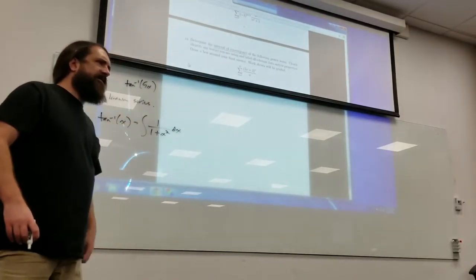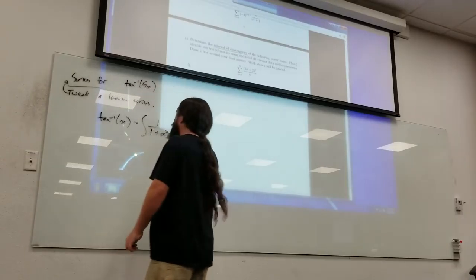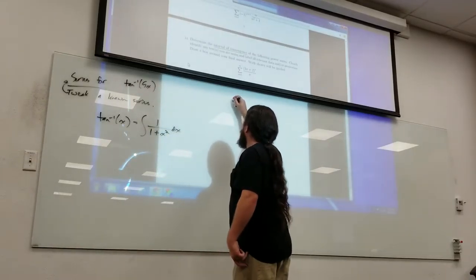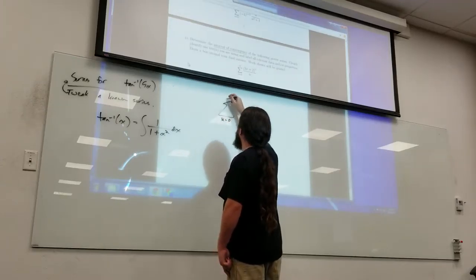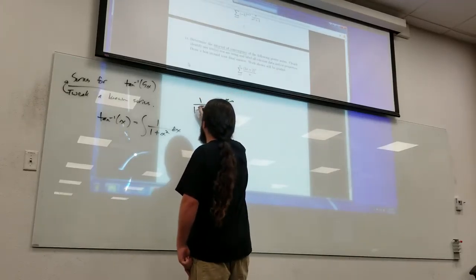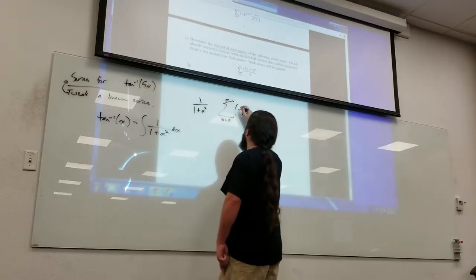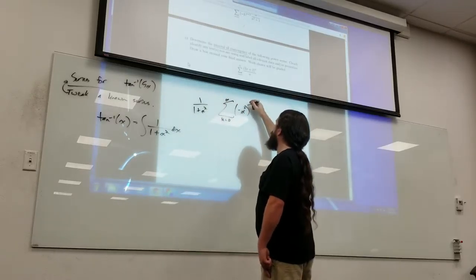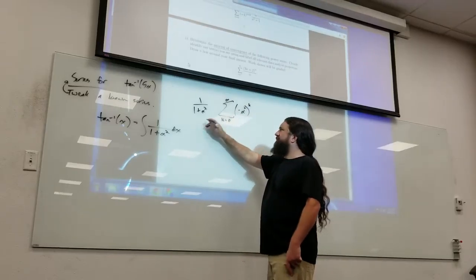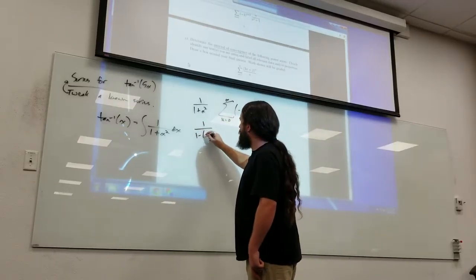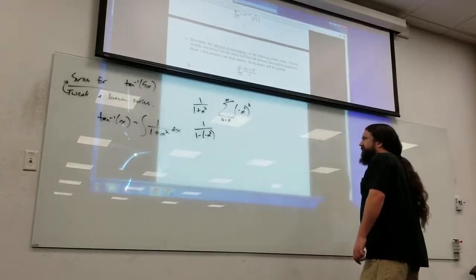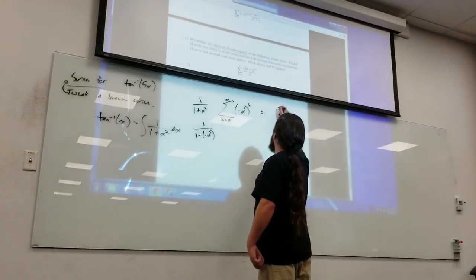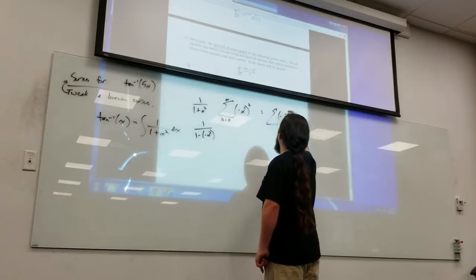If I wanted, say k equals zero to infinity, I know one over one plus x squared is going to be the sum of negative x squared to the k. The reason for that is this is one over one minus negative x squared, right, so it's part of a known series. So this is going to be the sum of negative one to the k times x to the 2k.